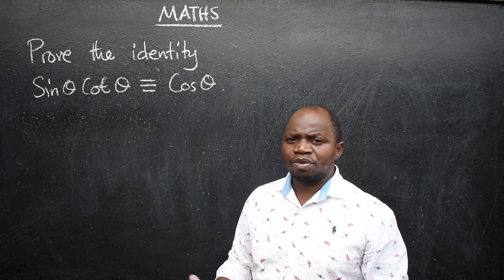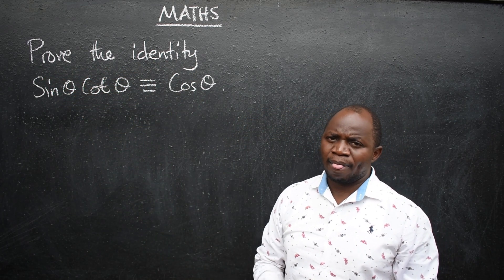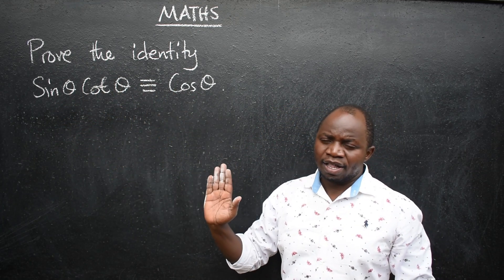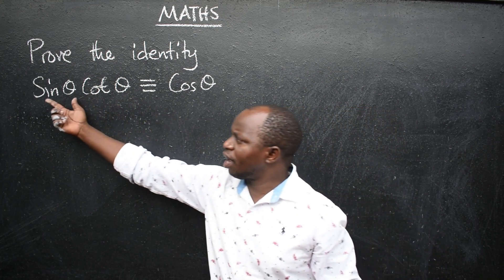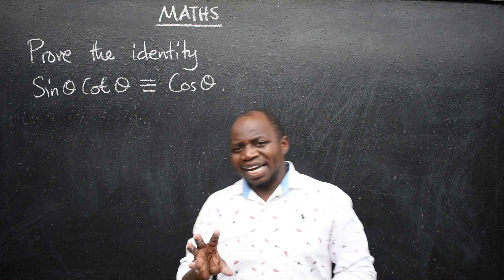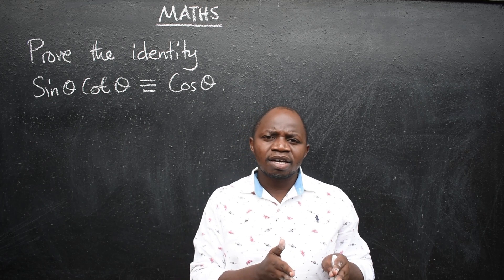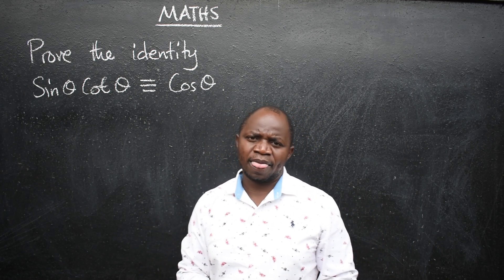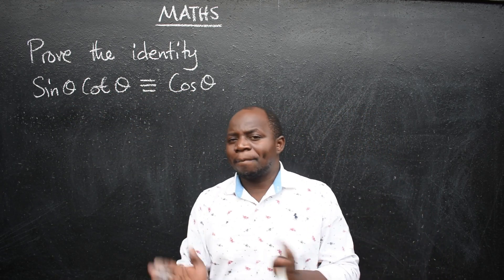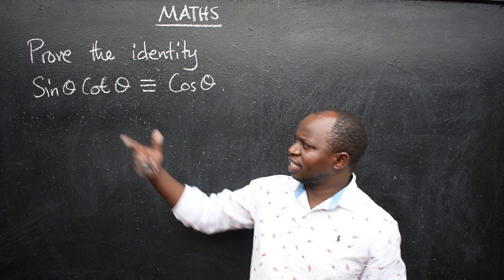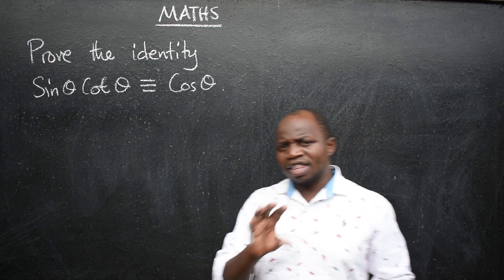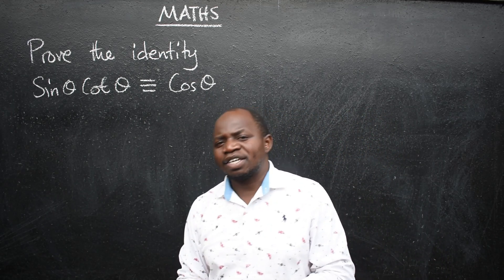Whenever you're asked to prove a given identity, you have to look at the two sides that you've been given. In this case, we have the left-hand side and the right-hand side. You have to take the side that is looking to be complicated. Look at the two sides — you can agree with me that it is the left-hand side that looks complicated. So that complicated part is the one that you are going to take.